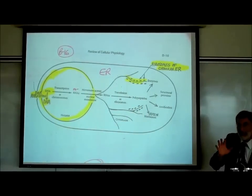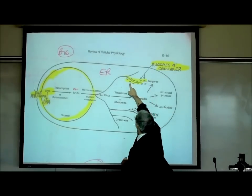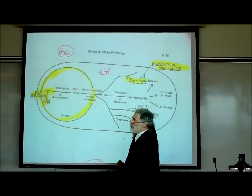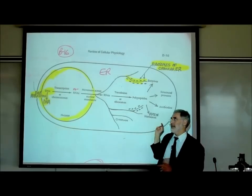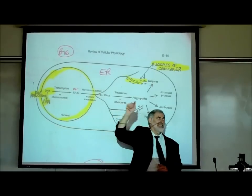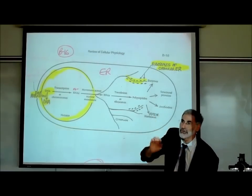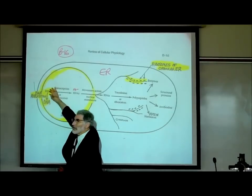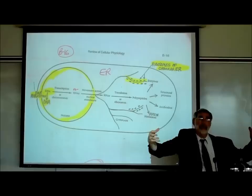Here's the problem: proteins are built at the ribosomes of the granular or rough ER, but where are the instructions for how to build the protein? They're here in the nucleus — that's what DNA is. Each gene on the chromosomes is an instruction for how to build a protein. So how do we get the instruction out to the construction site where the protein is going to be built?